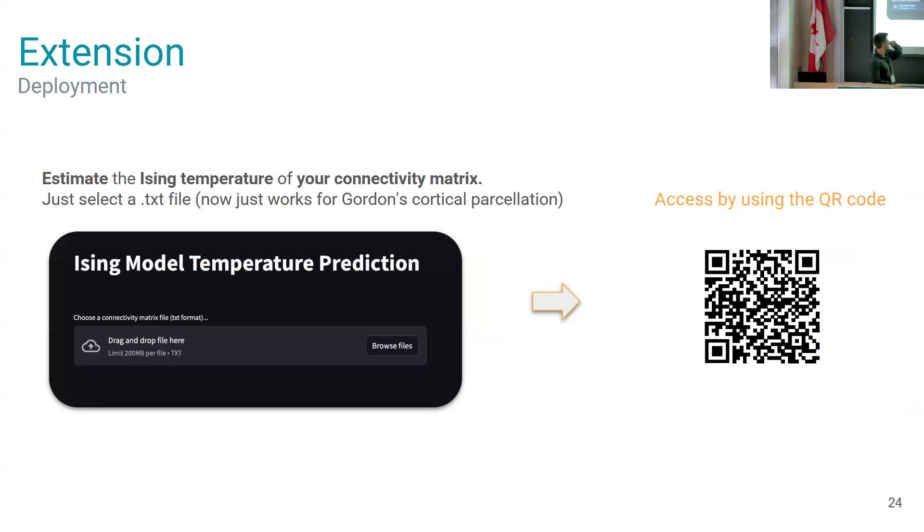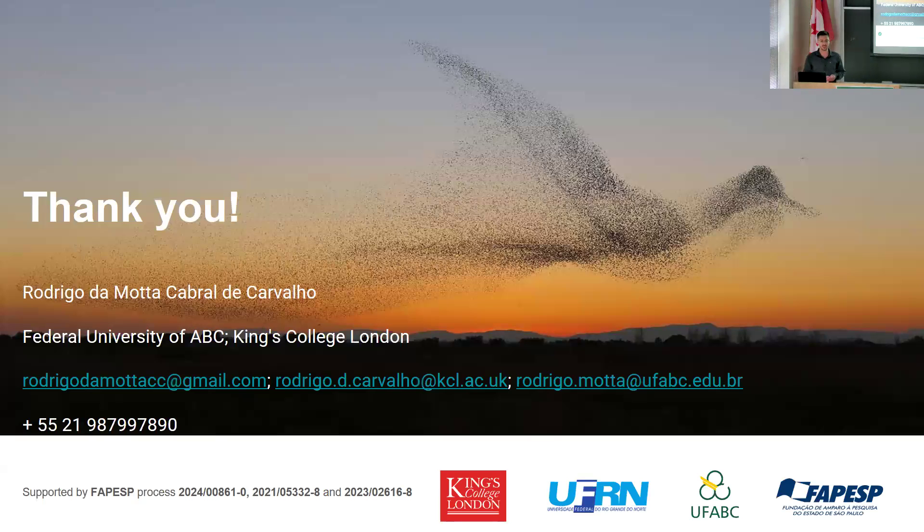You can also check your own temperature if you want. This model is deployed, but you need to follow a specific parcellation, which is the Gordon's parcellation, 333 ROIs. Then you can just simply grab your functional connectivity matrices and check which is the temperature of the matrix. And that's it. Thank you everyone.